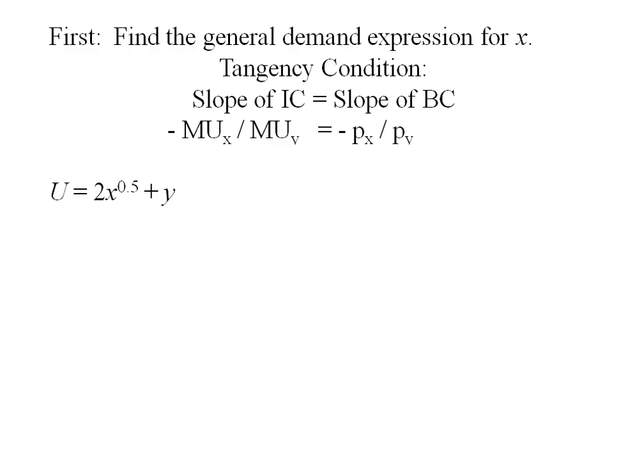Looking at our original preferences, we'll partially differentiate with respect to x and we'll get x to the negative 0.5. We'll partially differentiate with respect to y and we'll get 1.